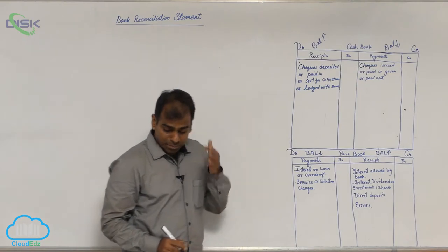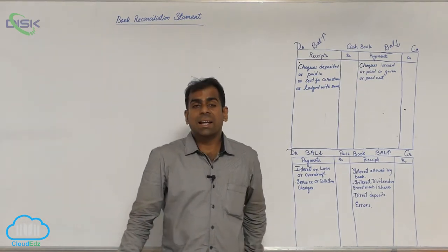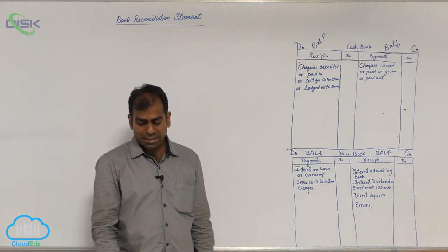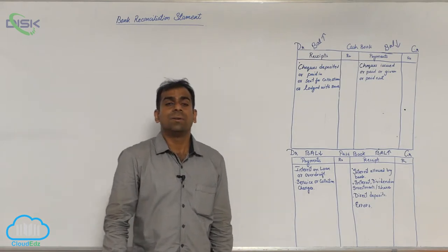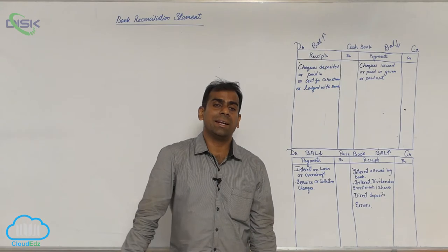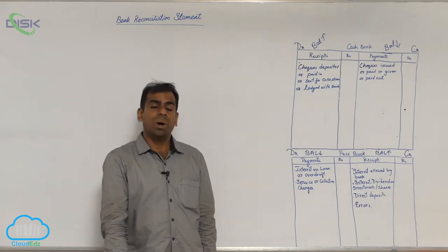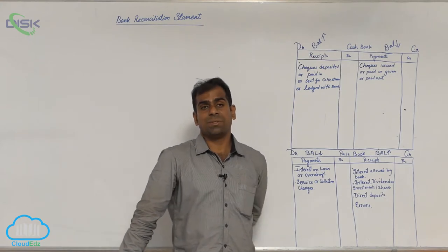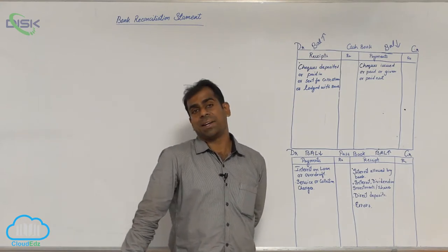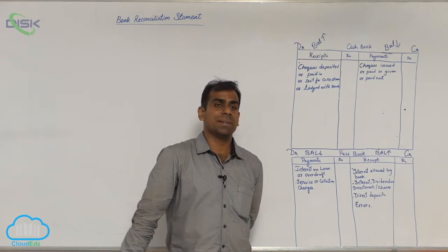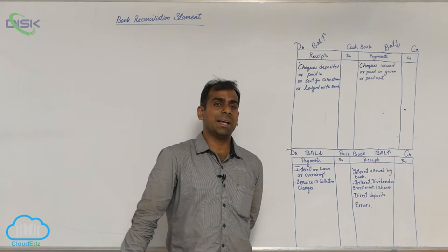Next is direct payments by bank. What are direct payments by bank? For instance, nowadays you pay your electric bill, mobile bill, internet bill, whatever other payments, utility bills, via internet or through your mobile.